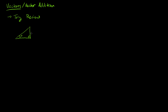Here's a right triangle. If the angle is over here, then opposite the 90 degrees is the hypotenuse, next to the angle is the adjacent side, and opposite the angle is the opposite side. We have trig ratios: sine of the angle is opposite over hypotenuse, cosine is adjacent over hypotenuse, and tangent is opposite over adjacent.